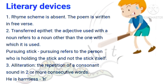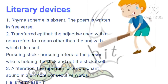Finally, the poet has made use of the device alliteration. It is the repetition of a consonant sound in two or more consecutive words. In this poem, the poet has used alliteration in the line "He is harmless." The sound H is repeated in this line.